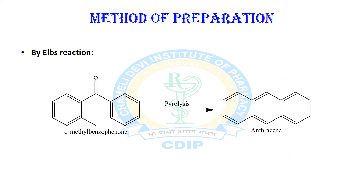The Elbs reaction is the thermal decomposition reaction, which is the classical method for the preparation of anthracene in the laboratory. It involves the cyclo-dehydration of ortho-methyl or ortho-methyl substituted diaryl ketones. When such a molecule undergoes pyrolysis — that is, thermal decomposition — cyclization occurs and anthracene is formed. For example, ortho-methylbenzophenone undergoes pyrolysis to result in the formation of anthracene. This is one of the most important and most widely used methods for the preparation of anthracene.